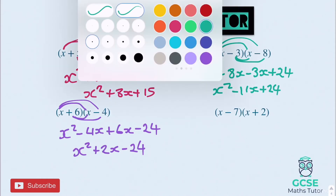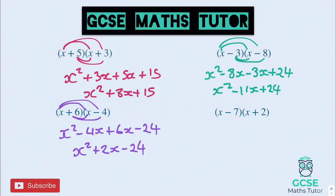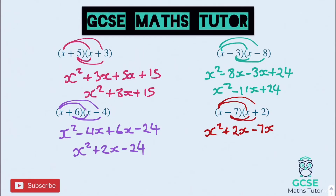And then on to the last one. x times x is x squared. x times 2 is 2x. Negative 7 times x is negative 7x. And negative 7 times 2 is negative 14. Tidying up the middle: plus 2 take away 7 is minus 5, so negative 5x in the middle, minus 14.